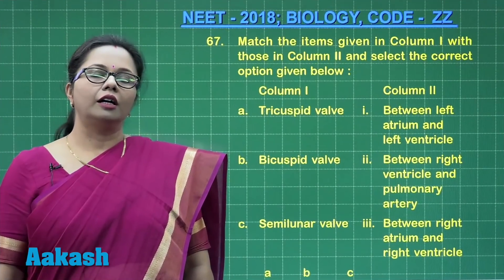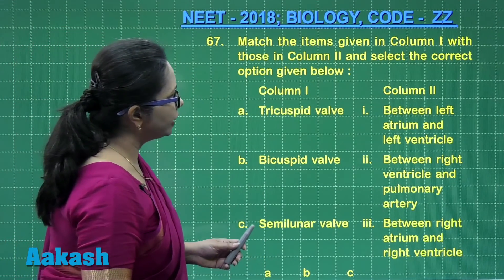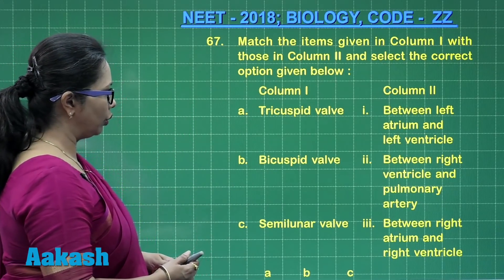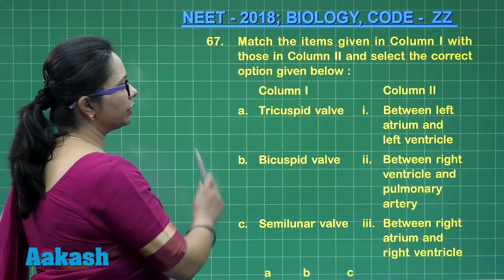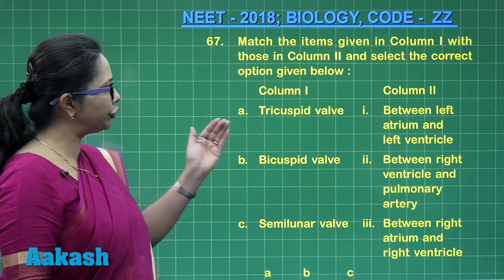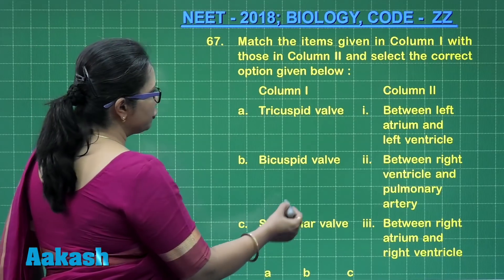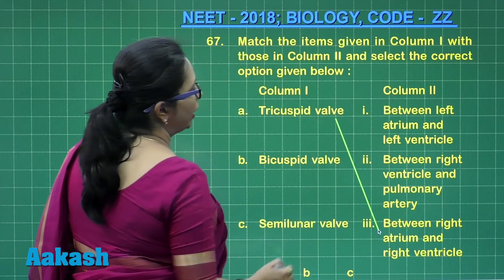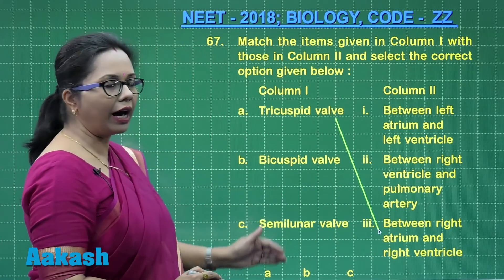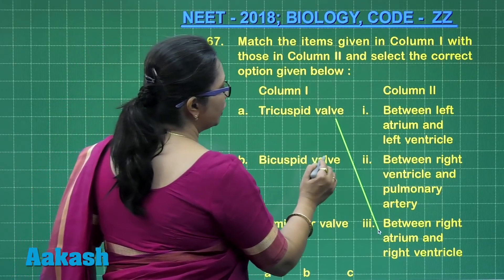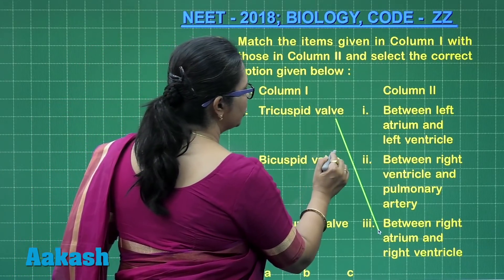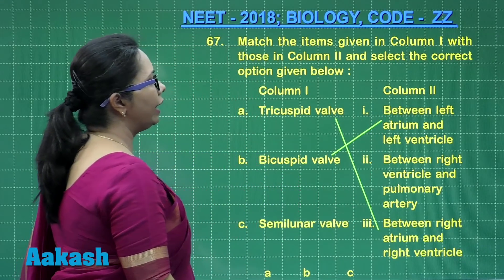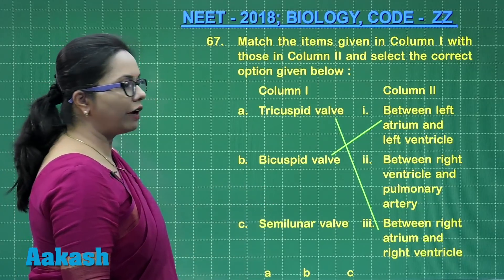Question 67: Match the items given in column 1 with those in column 2 and select the correct option. The tricuspid valve is one of the atrioventricular valves found between the right atrium and right ventricle. The bicuspid valve, or mitral valve, is another AV valve on the left side, located between the left atrium and left ventricle.